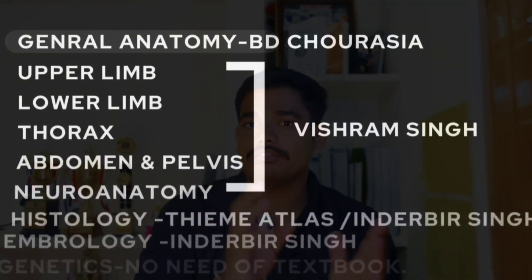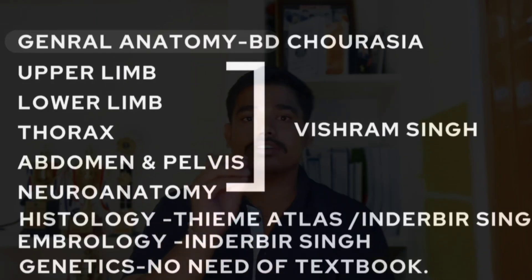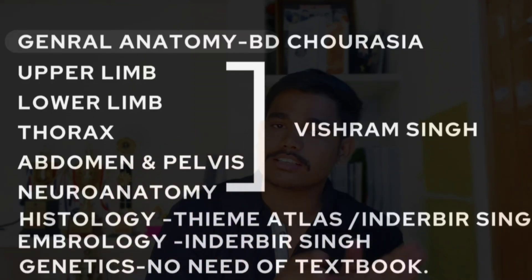In biochemistry and physiology there is a single textbook covering the whole syllabus, but in anatomy there are different books for different parts of the body — general anatomy, upper limb, thorax, abdomen, neuroanatomy, histology, embryology, genetics, etc. For general anatomy, prefer BD Chaurasya. For upper limb, lower limb, thorax, abdomen, and neuroanatomy, prefer Vishram Singh. For histology, Thieme Atlas has good diagrams and Inderbir Singh has good descriptions. So except for general anatomy, you can prefer Vishram Singh.